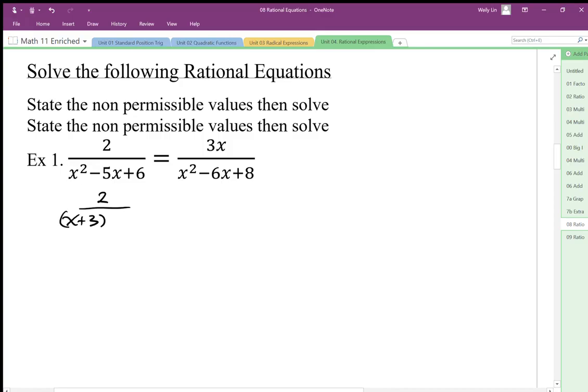So I'm going to factor two numbers that multiply to six add to negative five that should be minus three minus two. And then two numbers that multiply to eight and add to negative six are going to be minus four minus two.